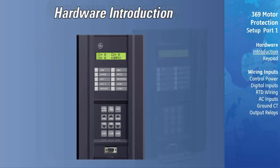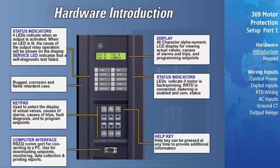The 369 is contained in a compact plastic housing with the keypad, display, communication port, and indicators on the front panel. A unique feature of the 369 is its ability to learn individual motor parameters and to adapt itself to each application.